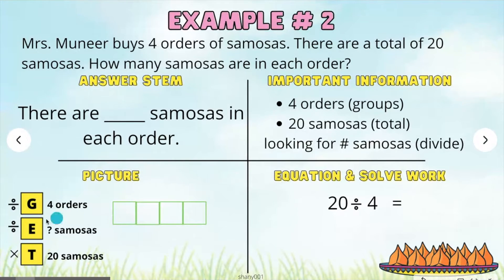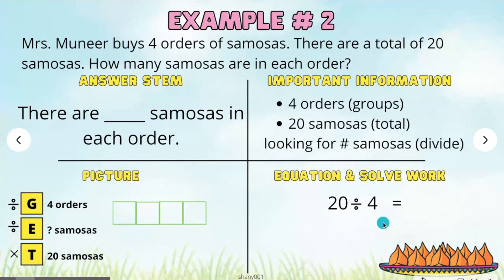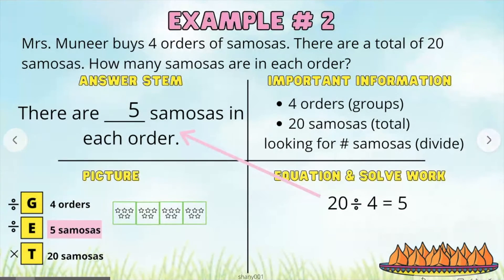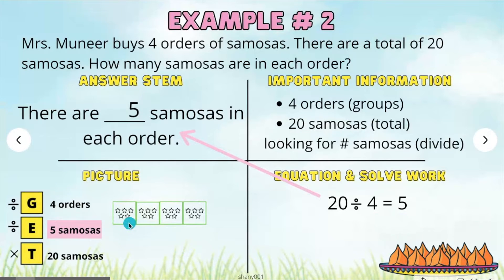We will go ahead and divide. We're first going to draw 4 squares, which tells us our 4 orders. We're going to write 20 divided by 4 — total of 20 samosas divided by the 4 orders. We'll use a multiplication chart: first locate the 4, then slide over to 20, and look at the top. The answer is 5. There are 5 samosas in each order. 20 divided by 4 equals 5. Go ahead and fill in your picture model with 5 objects in each square.